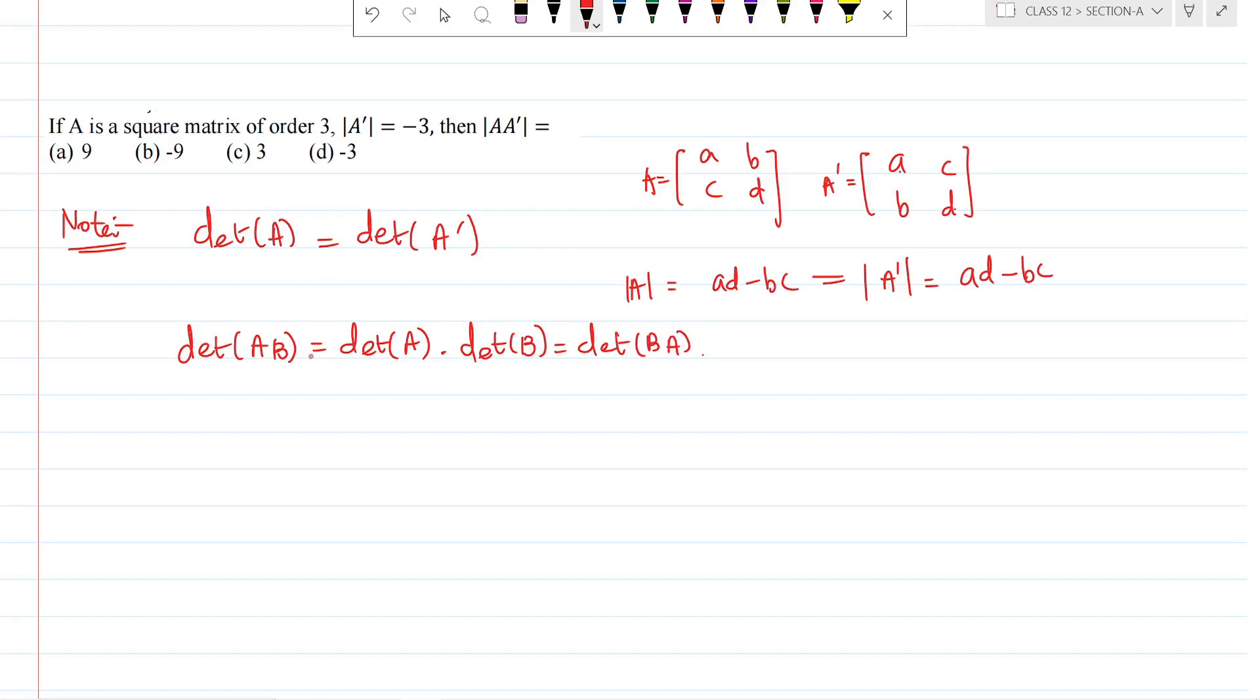Using these two properties we can find the answer. Given that determinant of A transpose is equal to minus 3, using the first property, determinant of A dash is equal to minus 3, that implies determinant of A is minus 3.